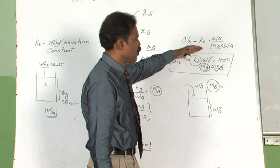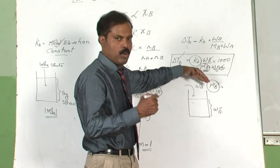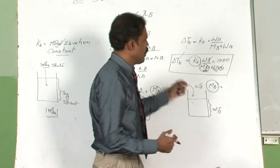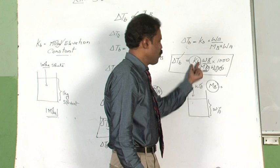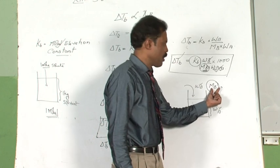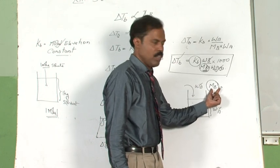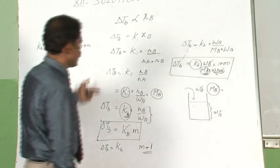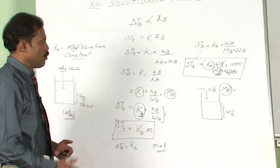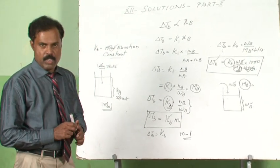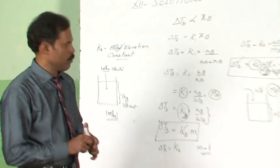Kb of all the solvents we normally use are calculated and tabulated. We can any time use the value for calculation of molecular weight of an unknown substance. This is how the elevation in boiling point can be used to find out molecular weight of a substance.